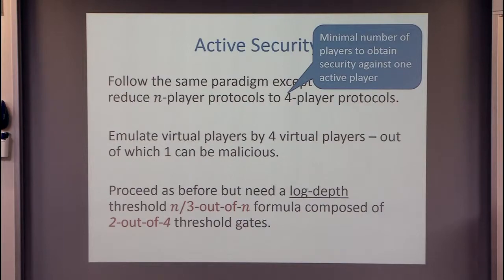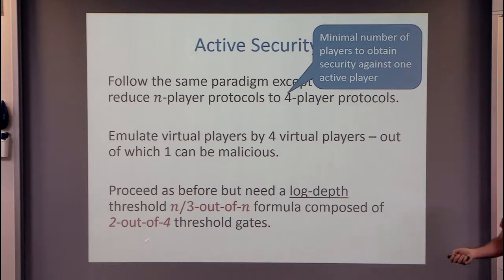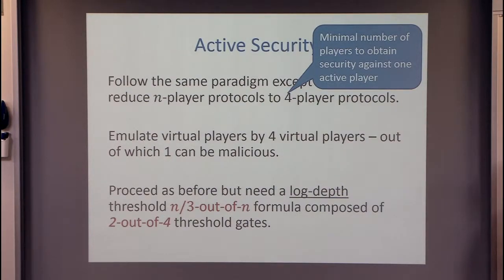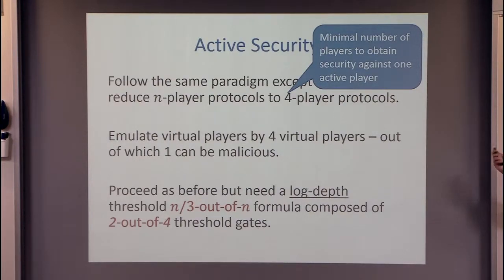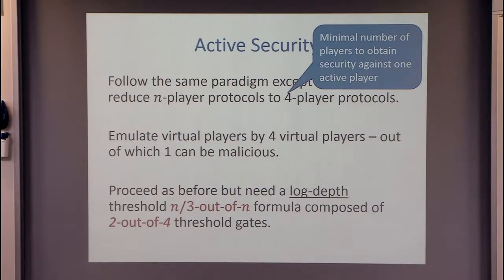Unfortunately, an analog of Valiant's construction doesn't directly give the one-third threshold function needed. However, we did manage to construct a deterministic construction that doesn't exactly compute the one-third function but is a very good approximation — certainly if 32% of the players are corrupt, we're fine. We can handle even less than a constant gap. We can also get the result where, with broadcast, you get security up to half the players being malicious, as in the Ben-Or and Rabin result.